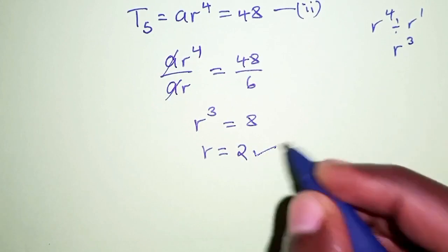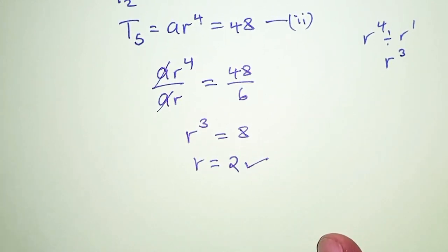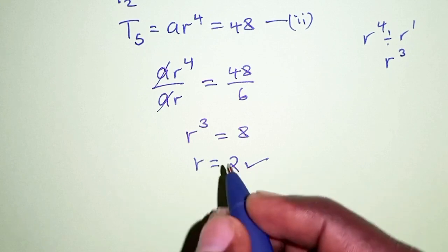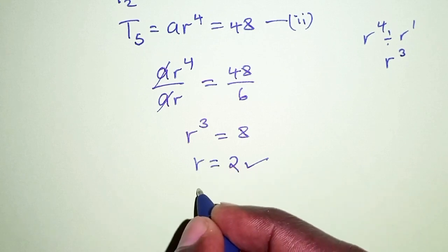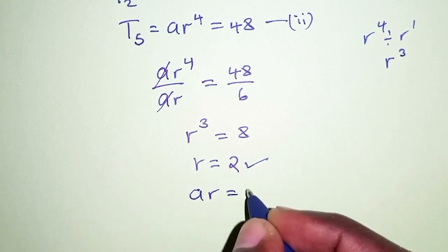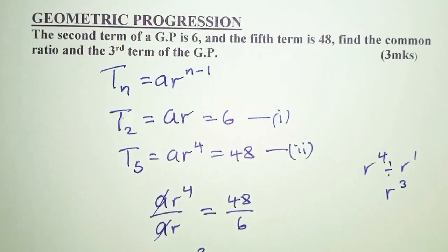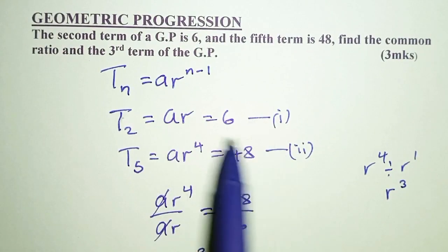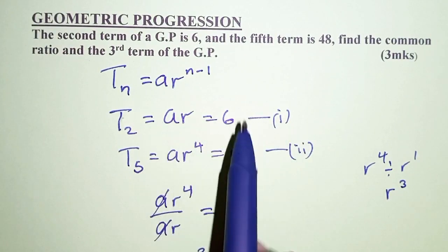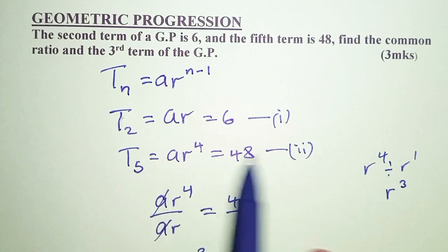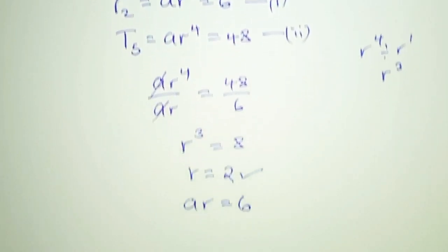So this is the common ratio. We can now determine the value of a, that is the first term. We have ar is equal to 6. That is from this first equation. I'm using this because it appears to be the simplest. We can also use equation 2 and arrive at the same answer.